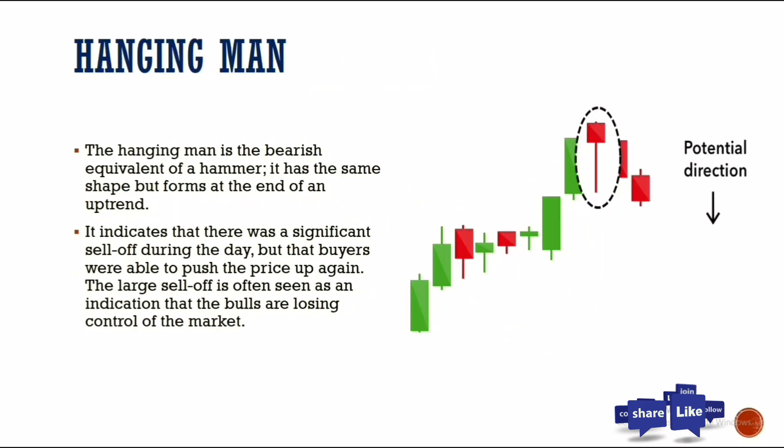Now let's look at the hanging man, which is a bearish reversal candle. It is the bearish equivalent of the hammer — it has the same shape but forms at the top of price rather than the bottom. Anytime you see the hanging man forming at the top of the market, it mostly indicates signs of bearishness and a potential direction to the downside.